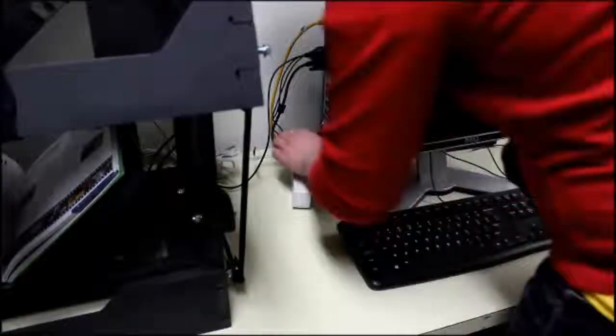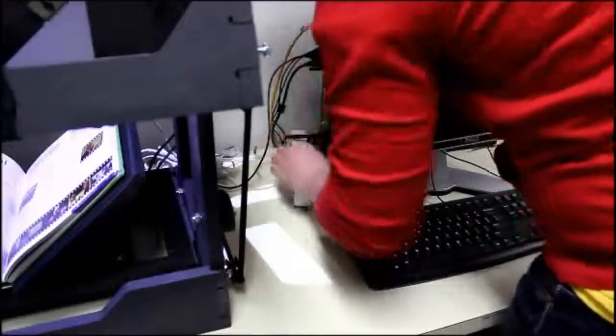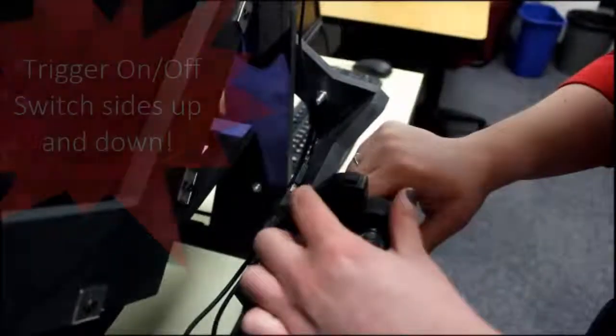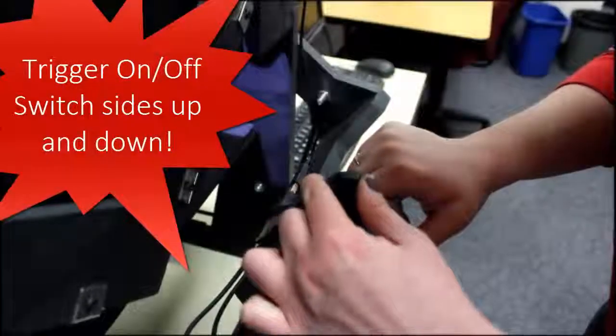Turn on the power strip next to the book scanner. This will turn on the light and power the cameras. Turn on the camera trigger located on the handle arm.